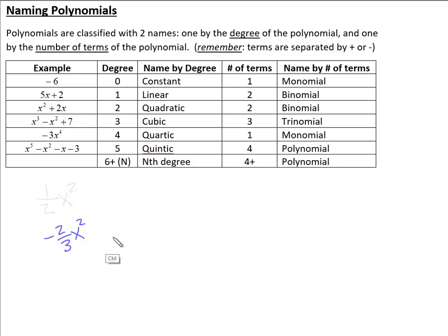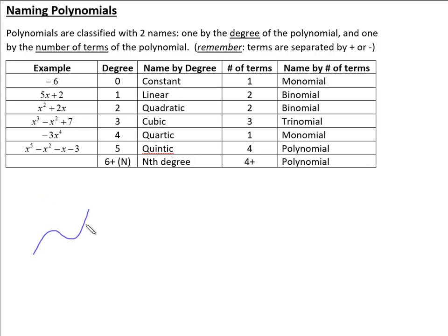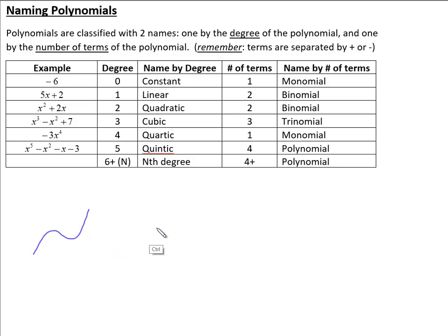That's true about our equations. When we look at their graphs, they'll always be continuous and smooth. Sometimes they'll make curves, but they'll never make sharp corners, and they'll never jump and continue like piecewise functions.